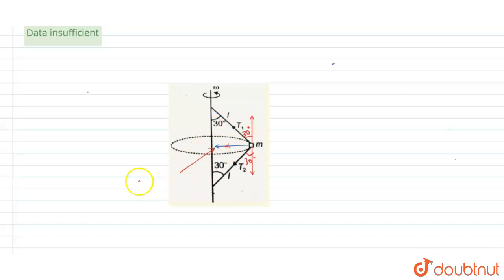So here I can write this as T1 plus T2 sine of 30 degrees. And in vertical direction, this will be T1 cos of 30 and this will be T2 cos of 30.